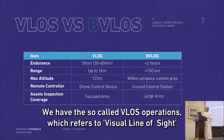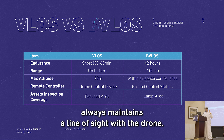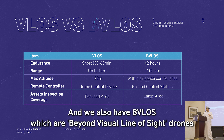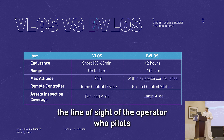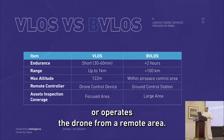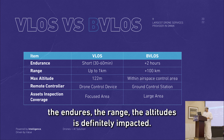We have the so-called VLOS operations, which refers to visual line of sight, and this is where the pilot or the drone operator always maintains a line of sight of the drone. We also have BVLOS, which are the beyond-visual line of sight drones, and in these operations the drone or aircraft can actually exceed the line of sight of the operator who pilots it from a remote area. As a result of those two operation modes, the endurance, the range, and the altitude are definitely impacted.